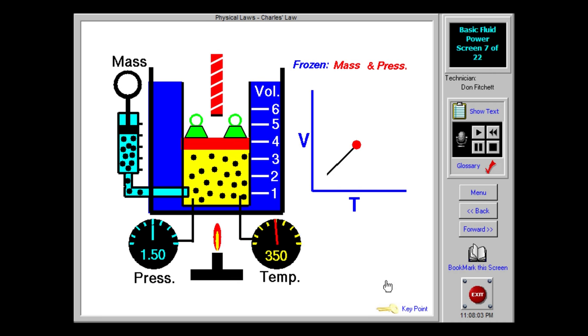While absolute pressure is always higher than gauge pressure by the amount of a barometer reading, generally 14.7 PSI, absolute temperature is always 460 degrees higher than the reading of a Fahrenheit thermometer.